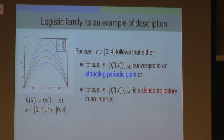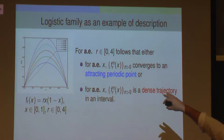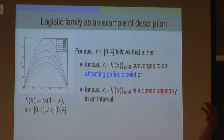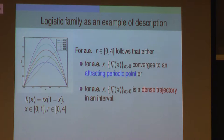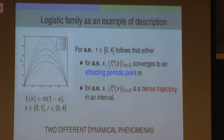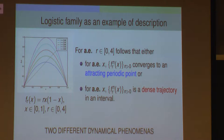Either there is one attracting periodic point and almost every trajectory converges to this attracting point, or there is an interval smaller than [0,1] with the property that the forward trajectory for almost every point is going to be dense. So you have these two types of behavior. The first one people call regular, the second one chaotic. In fact, it's possible to show that in the second one the dynamic is also ergodic.